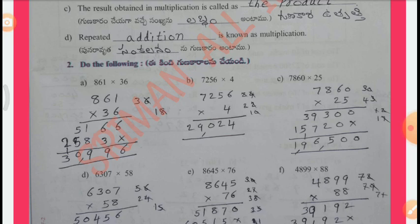By adding these two, we get 6, 9, 9, 10, 3 — 30,996. By this way, the remaining problems we can solve.